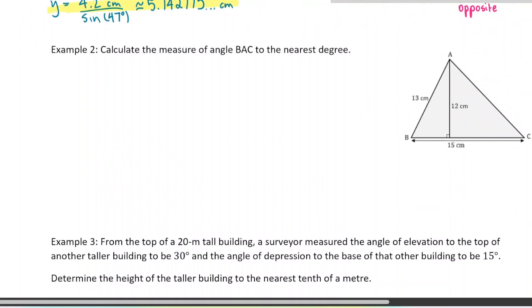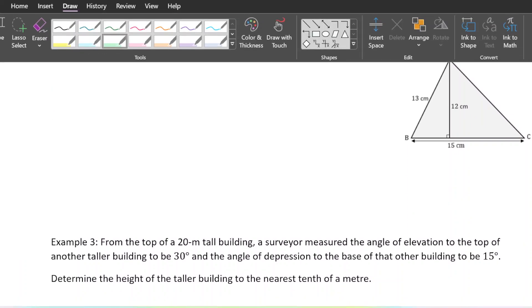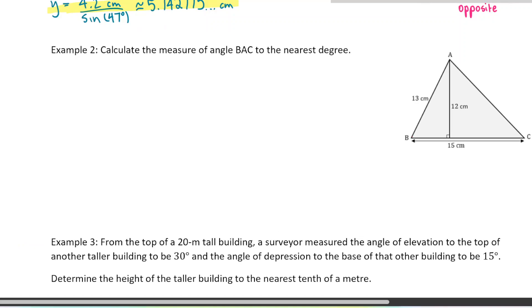Example two: calculate the measure of angle BAC to the nearest degree. When we talk about angle BAC, going from B to A to C, that's the angle created there — it's this large angle here, and I want to find it. I can't find it directly because it's part of a big triangle that does not have a right angle in it.